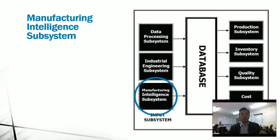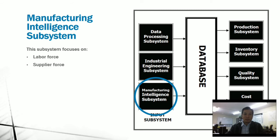The next subsystem is the manufacturing intelligence subsystem, which focuses on labor force and supplier force. Labor force involves finding the right personnel for the job. The system communicates with the personnel department and provides labor requirements, enabling them to get the right person by communicating with the community, schools, and job hunters. For supplier force, it focuses on finding the right supplier with quality raw materials at low cost.